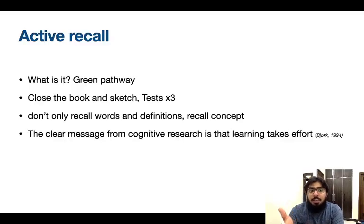We reiterate here what is active recall, the green pathway. So how do you do it? You read a topic from a book and rather than just rereading it again you close that book right there and sketch it. You can sketch and write down on a blank piece of paper whatever you have learned. What else you can do is you can do tests of that topic. You can do flashcards of that topic.